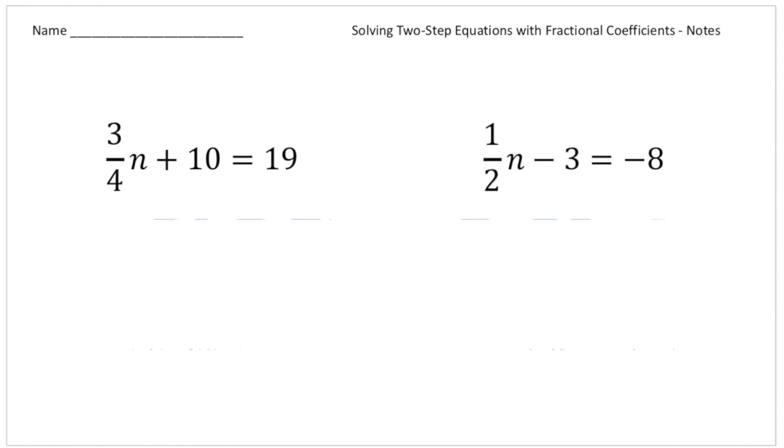All right? So for this problem, we have 3 fourths n plus 10 equals 19, and for this problem, we have 1 half n minus 3 equals negative 8. And notice both of these have fractional coefficients. Well, this one over here is 3 quarters, and this one over here is 1 half. So we're actually going to solve these problems at the same time.